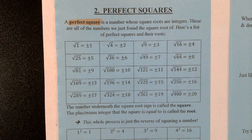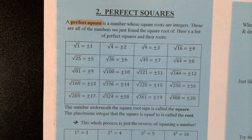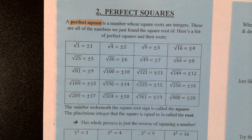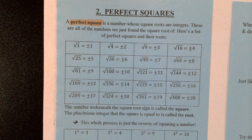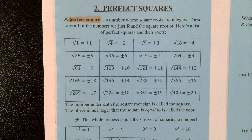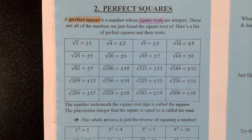A perfect square is a number whose square root is a whole number. Here is a list of perfect squares and their roots. Now this is where things get a little confusing, because we have two separate vocabulary words here: 'perfect square' and 'square roots.' These two things get confused quite a bit, so let's clarify right away.